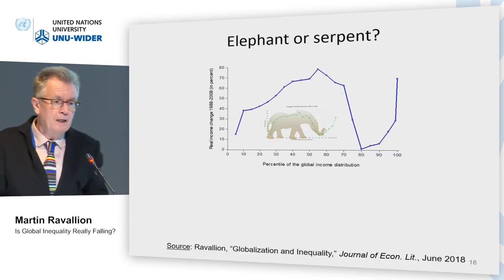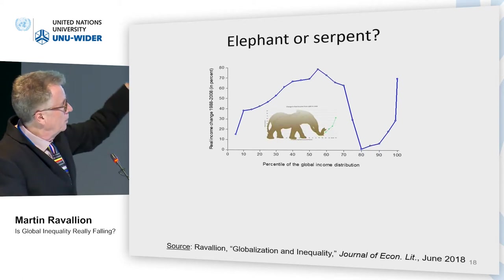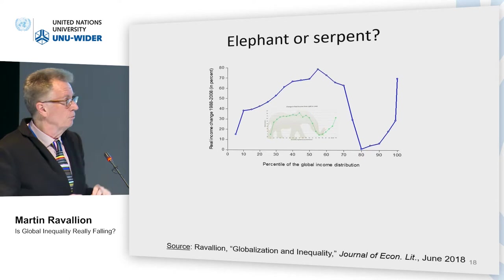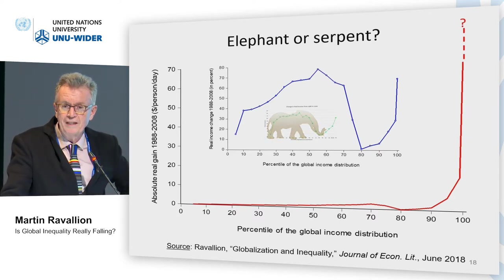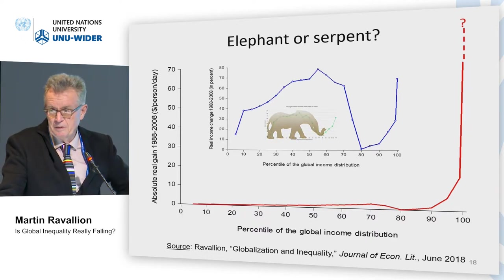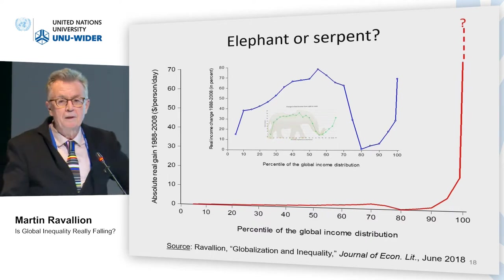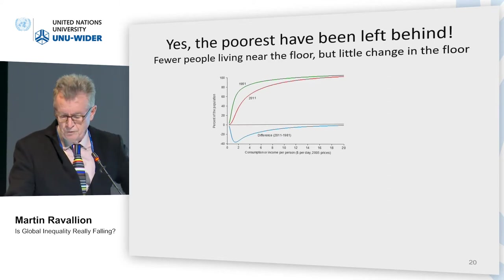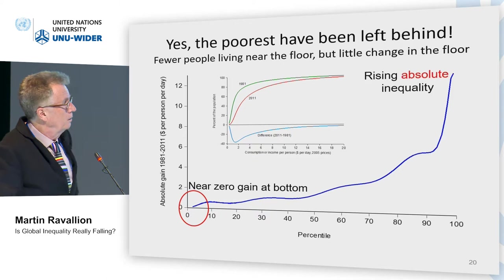Here's another way of looking at it: the Lackner-Milanovic elephant graph — a growth incidence curve for the world with percentiles on the horizontal axis and proportionate changes on the vertical axis. That's all relative. This is what the elephant curve looks like in absolute terms: absolute gains on the vertical axis against percentiles of the distribution. It's massively absolute inequality increasing. And we don't really know how bad it is at the very top.